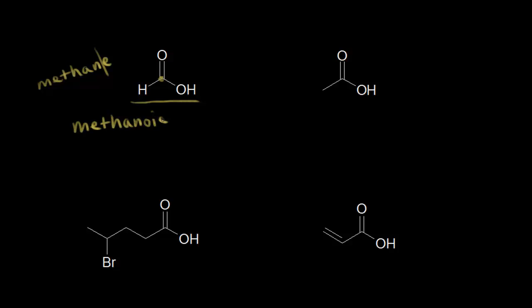Methanoic acid is the IUPAC name for this molecule. The common name for this is formic acid, which is what you'll hear more often. The name comes from the Latin word for ant, because formic acid is found in ant venom.